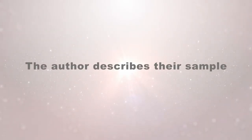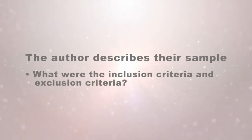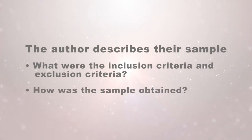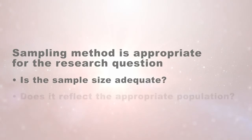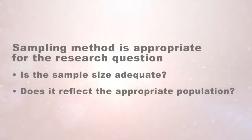Next in the methods section, the author should describe their sample. What was the inclusion criteria? The exclusion criteria? How was the sample obtained? As a reviewer, you need to make sure that the sampling method is appropriate for the research question, that the sample size is adequate, and that it reflects the appropriate population.